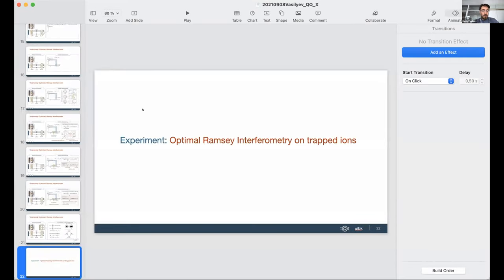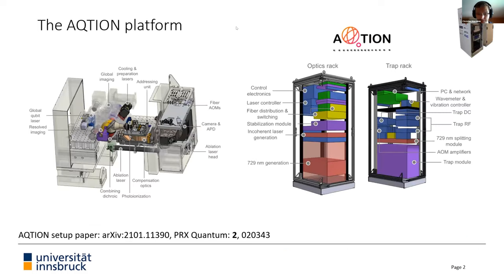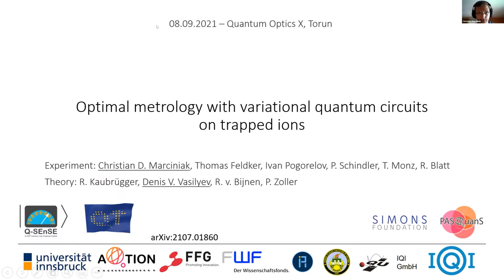The variational ansatz consists of layers of global rotations and one-axis twisting operations — a standard operation in trapped ions. I'll now hand over to Christian, who will present the experimental realization of our work.